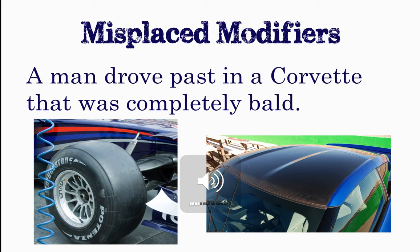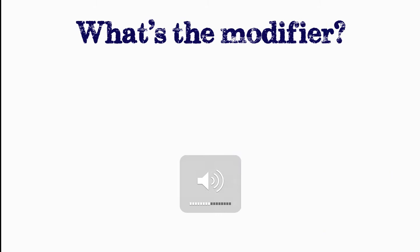Example number two: 'A man drove past in a Corvette that was completely bald.' Obviously cars don't have hair, so the car can't possibly be bald — though it's possible he was referring to the tires. Still, it doesn't make sense. What the author intended was to use the modifier 'completely bald' to refer to the man and not the car. So we need to place it nearer the word it's referring to.